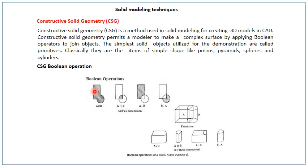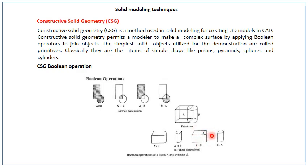Consider a rectangular block and a cylinder. The operation A union B combines them into one product. A intersection B gives the common part of A and B as the final product. In case of A minus B, the cylinder block is subtracted from the rectangular block. And B minus A subtracts the rectangular box from the cylinder. This is shown in both 2D and 3D representations.